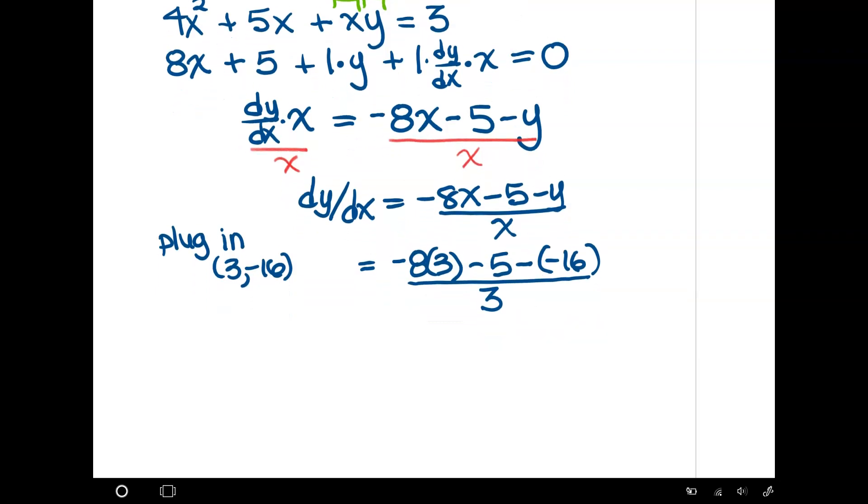Type it in your calculator, work it out. We're going to end up with -13 on top over 3. So the derivative at 3 is -13/3.